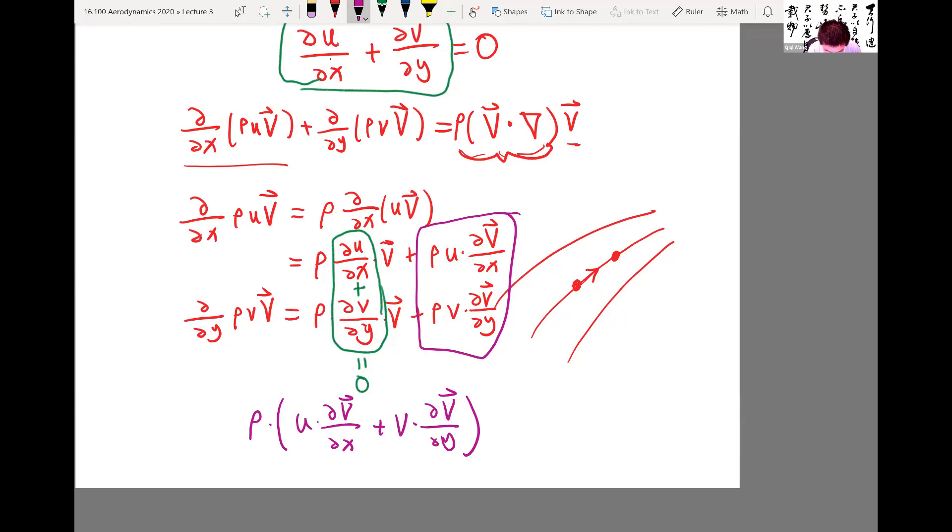So essentially what this is saying is that, okay, if I have a streamline that goes in this direction, and we can decompose it into a u and v, I want to multiply the x direction rate of change by how big the u velocity is, and I want to multiply the y directional rate of change by how big the y velocity is.